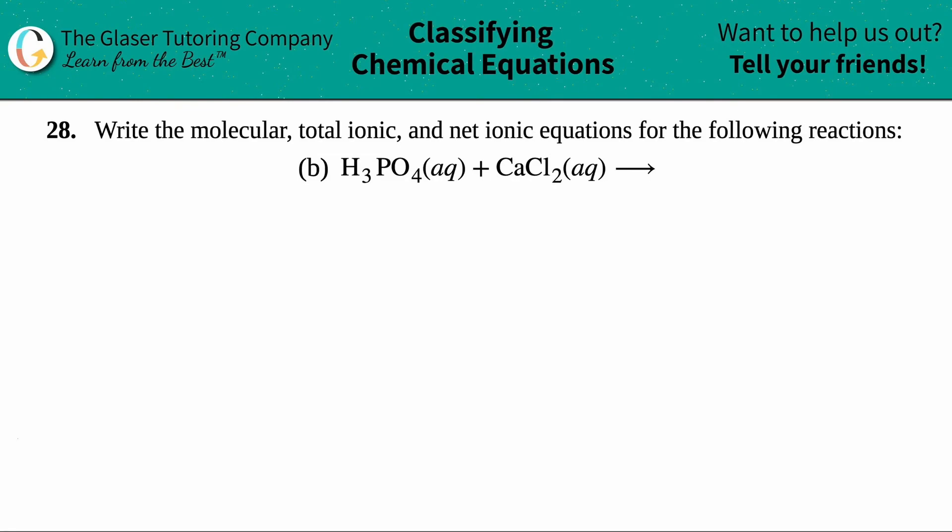Number 28. Write the molecular, total ionic, and net ionic equations for the following reactions, and then we have letter B. So in this case, we have to write the molecular, total ionic, and net ionic for H₃PO₄ aqueous plus CaCl₂, calcium chloride.